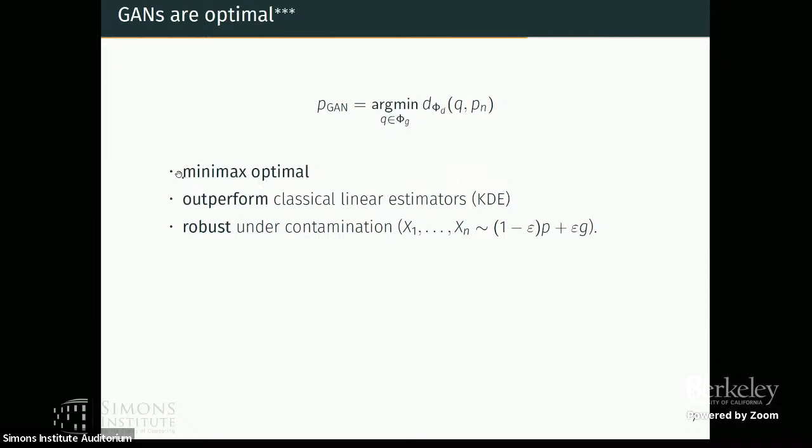And it is also robust under contamination. So all this means is that if some epsilon proportion of your data came from some other density that you don't know, and not from the true density, you can still show that this framework works and is statistically rate optimal.